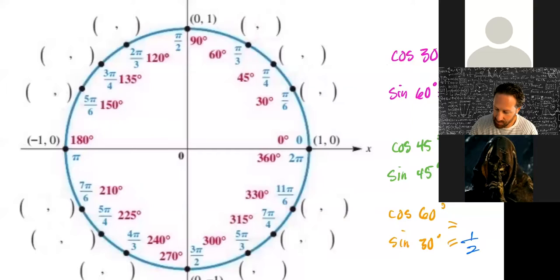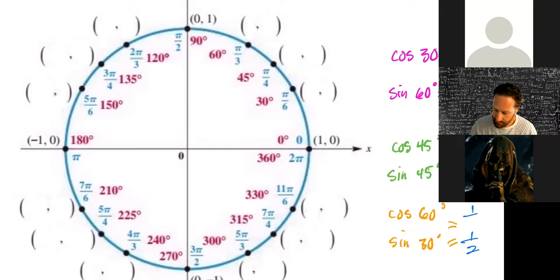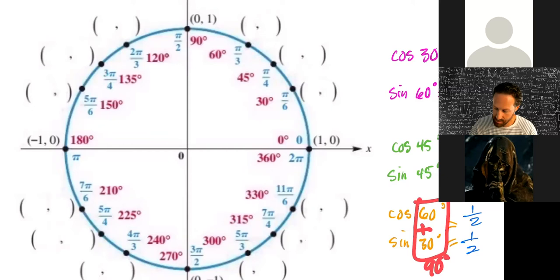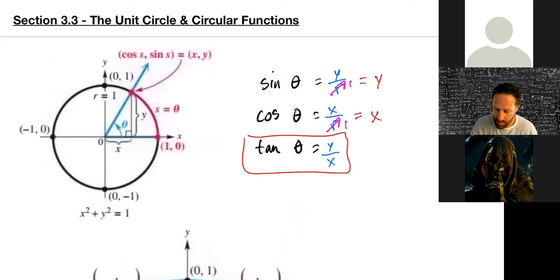Since 30 and 60 are complementary — they add up to 90 degrees — they share the same ratio. The cosine of 60 is 1/2, the same as the sine of 30. On the unit circle with r = 1, we can forget about the r's; sine equals y and cosine equals x.